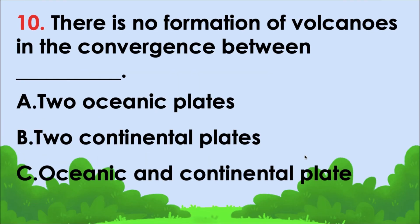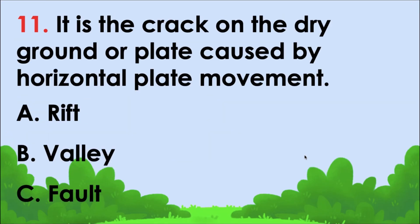There is no formation of volcanoes in the convergence between blank. The correct answer is letter B — two continental plates.